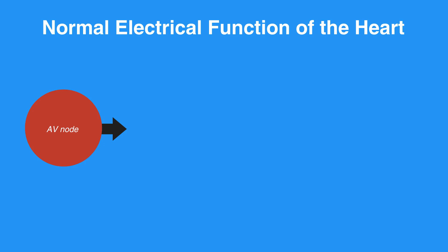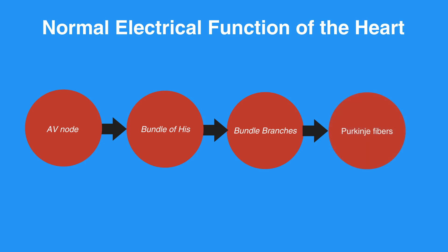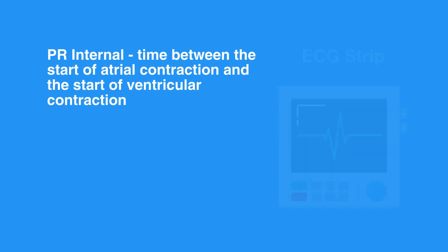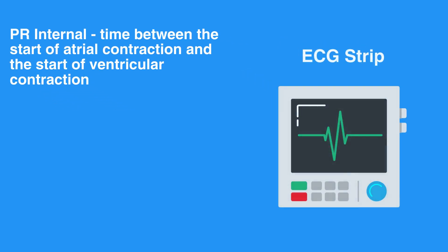This impulse then travels to the AV node, which in turn conducts the electrical impulse through the bundle of HIS, bundle branches, and the Purkinje fibers of the ventricles, causing ventricular contraction. The time between the start of atrial contraction and the start of ventricular contraction registers as the PR interval on an ECG strip. The ventricular contraction registers as the QRS complex.